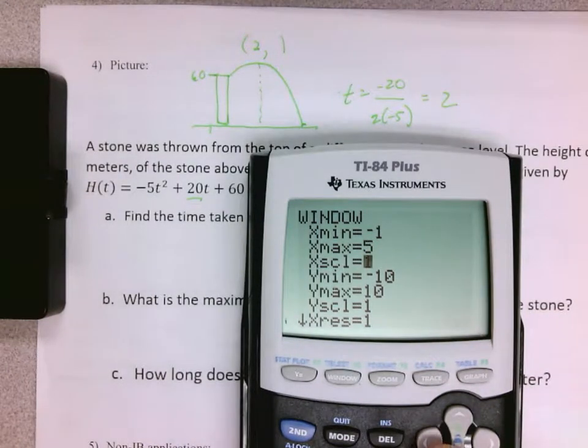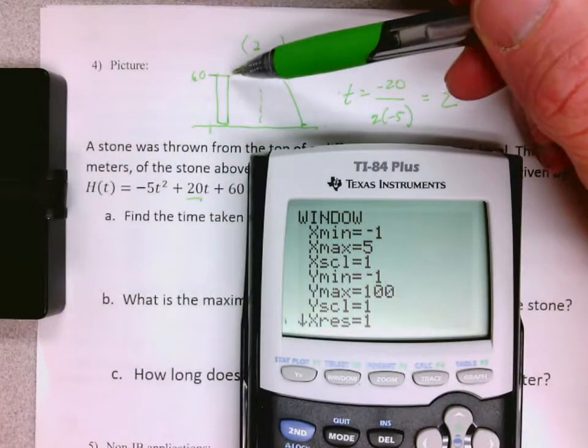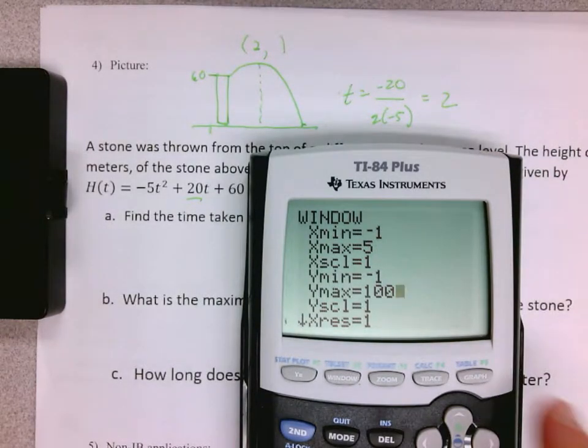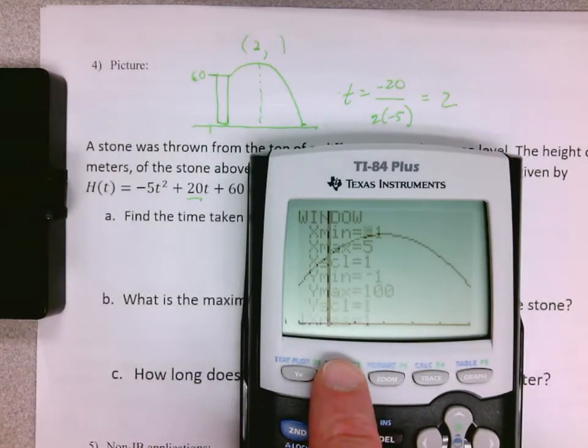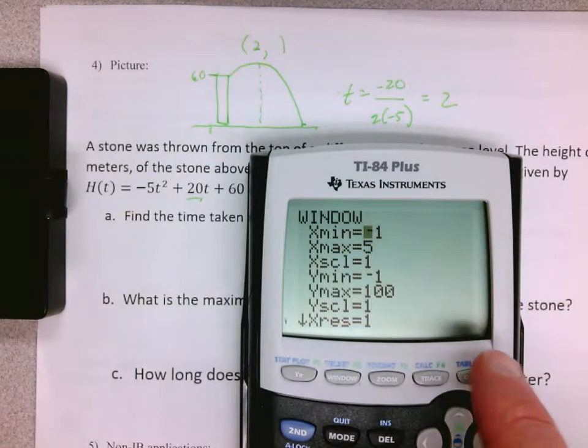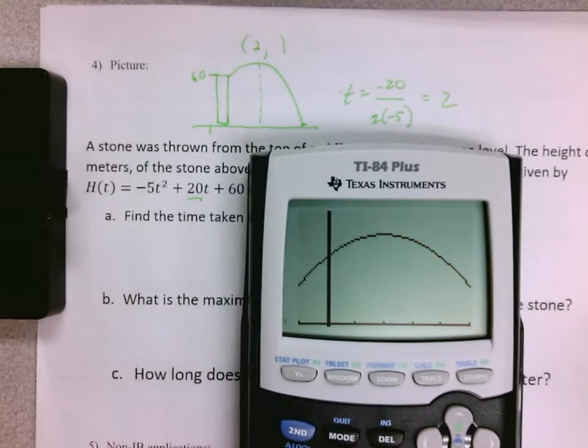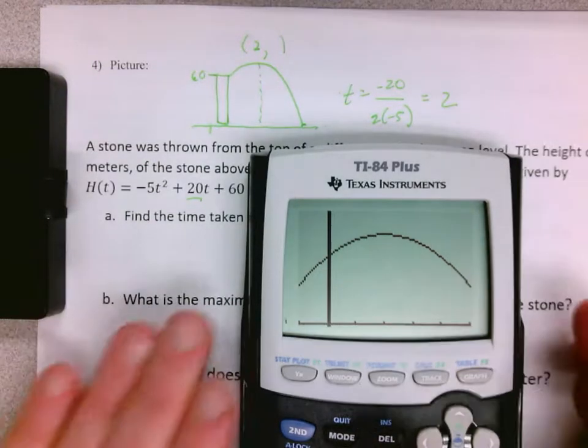My y-axis, I'm not exactly sure what I want it to be, but I'm going to go from negative one to a hundred and see if it works. I push graph and I want to be able to see the top of my parabola. If that didn't work, you go back and push window again and adjust it. So I have my graph here.